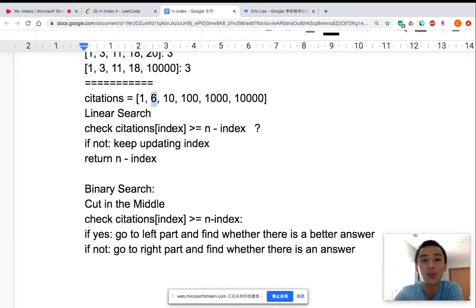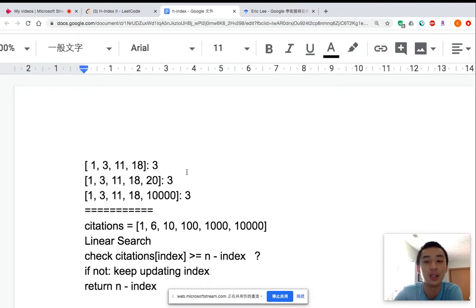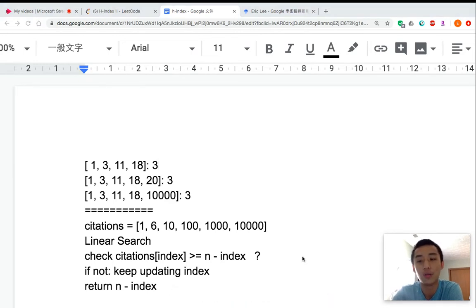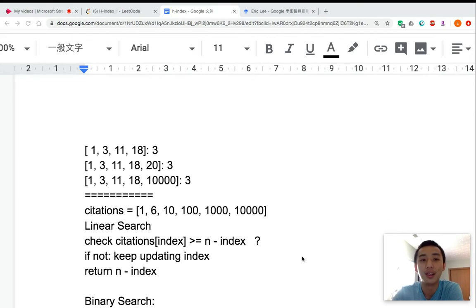I also want to illustrate why we use the H-index in academia. When we're in academia, we not only care about the total citations of the authors, we also care about how many good papers the author has. So if the H-index is high, it not only represents that the author has a lot of citations, it also means he has a lot of good papers.